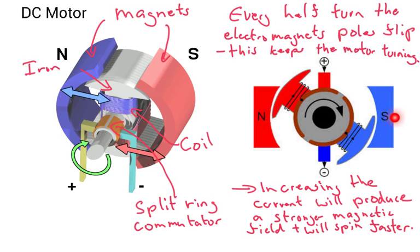But the split ring commutator keeps it turning, because every half turn, it makes sure whatever's on this side, whatever part of this metal rod is on this side, it will be repelled from this side. Likewise, this side will be repelled from here, and that keeps it constantly turning.